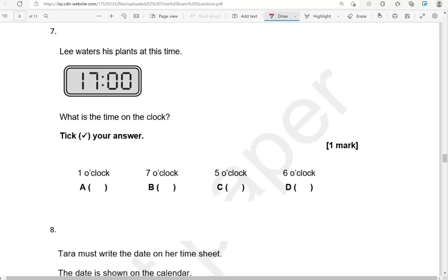Which we also read as 1700 hours. What is the time on the clock? Tick your answer. So, is it 1 o'clock? 7 o'clock? 5 o'clock? Or 6 o'clock? Now, this is in the afternoon in 24-hour format. So, we need to take away 12. 17 take away 12. 7 take away 2 gives us 5. 1 take away 1 is 0. You can also do this with a calculator. So, it is 5 o'clock.